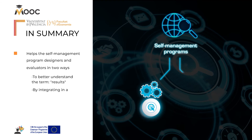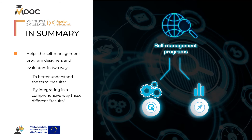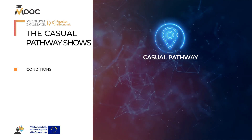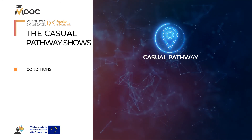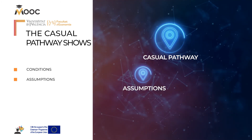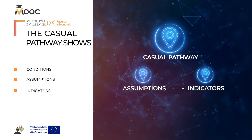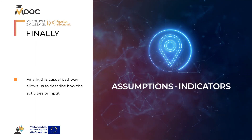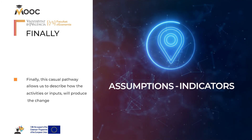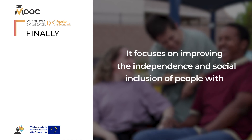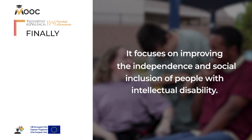Secondly, by integrating in a comprehensive way these different results components within a logic framework or causal pathway. The causal pathway shows the conditions that have to occur for our self-management program to work as expected — assumptions on the right side — and also the indicators to assess the progress on the left side. Finally, this causal pathway allows us to describe how the activities or inputs will produce a change, focusing on improving the independence and social inclusion of people with intellectual disability.